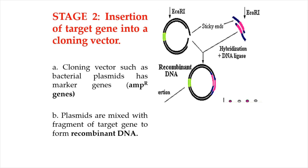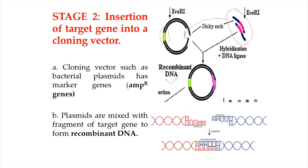The next stage is the insertion of the target gene into the cloning vector. A cloning vector such as a bacterial plasmid has marker genes, such as ampicillin-resistant genes. The plasmids are mixed with the fragment of target genes to form recombinant DNA. As both the plasmid and DNA fragments have the same complementary sticky ends, this allows them to stick together by complementary base pairing. The ligation between the plasmid and the DNA fragment is catalyzed by DNA ligase.